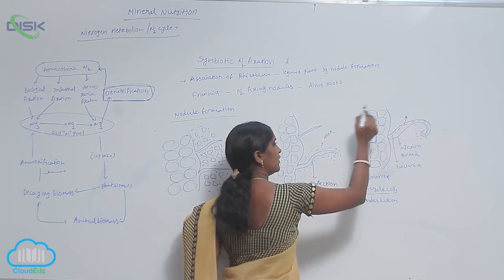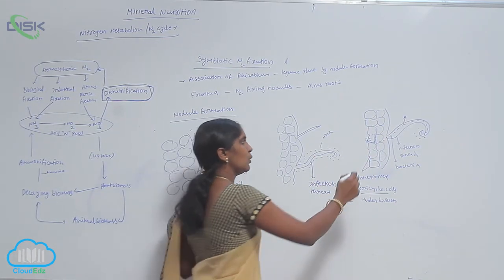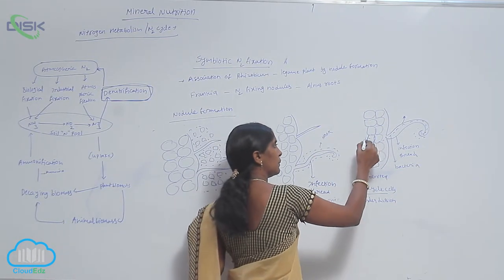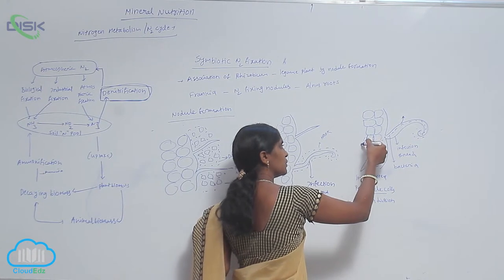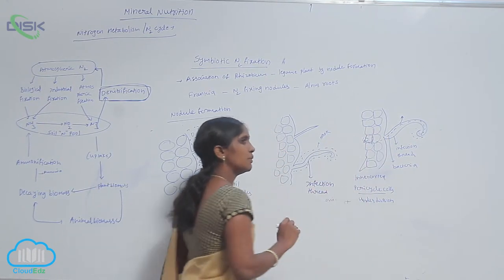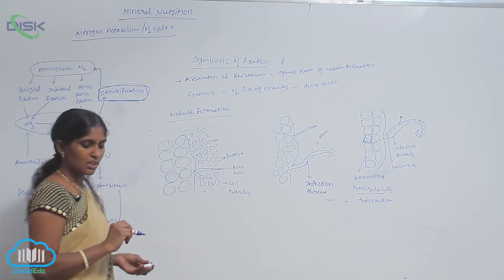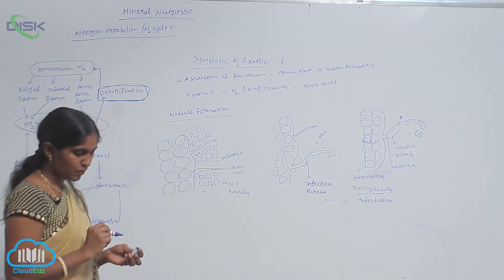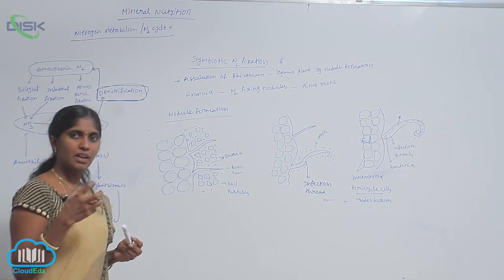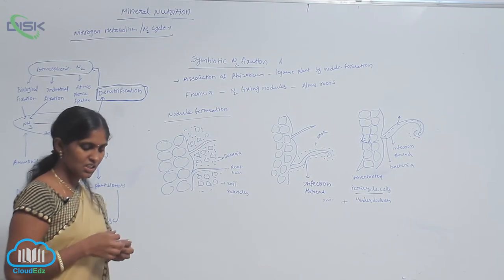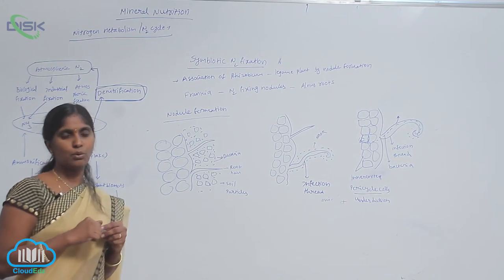After entry, the bacteria multiply rapidly and produce the nodule. Basically, the nodule is composed of bacteria, nitrogenase enzyme, and leghemoglobin.